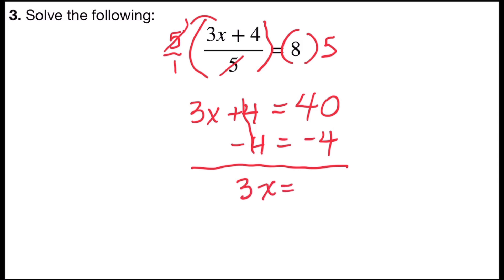And now I can divide both sides by 3 in order to make my coefficient equal to 1. 3 divided by 3 is 1x, and 36 divided by 3 is 12. And so the solution to the equation would be x equals 12.